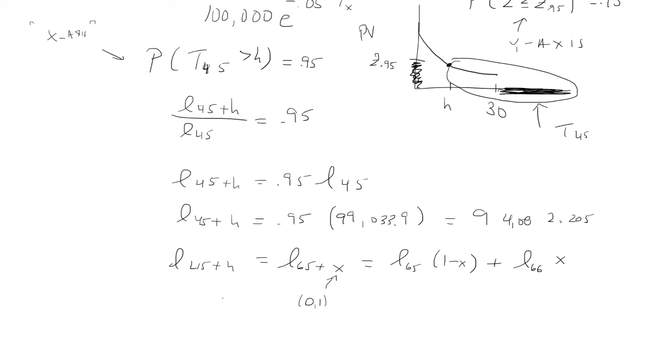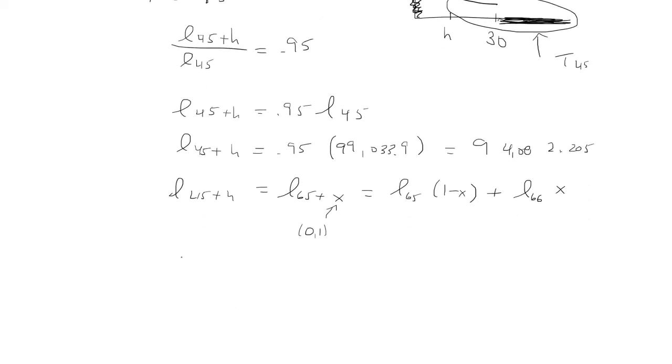Which is l 65 times 1 minus x plus l 66 times x. So we just plug everything in. So that was 94,082.205. Then l 65 is 94,579.7 times 1 minus x. L 66 is 94,020.3 x. And we get that x is equal to 0.88934.